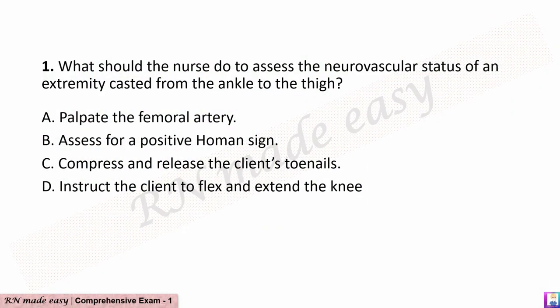Question 1. What should the nurse do to assess the neurovascular status of an extremity cast from the ankle to the thigh? A. Palpate the femoral artery. B. Assess for a positive Homans sign. C. Compress and release the client's toenails. D. Instruct the client to flex and extend the knee.